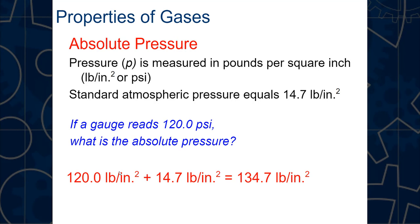Another quick problem: if the gauge reads 100 psi, what is the absolute pressure? That's correct — 100 psi plus 14.7 psi gives us 114.7 psi for absolute pressure. That's the value we'll need for everything except Pascal's law.